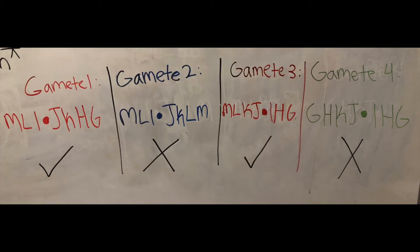From this, we can see that gamete 1 would be viable, gamete 2 would not be viable, gamete 3 would be viable, and gamete 4 would not be viable.